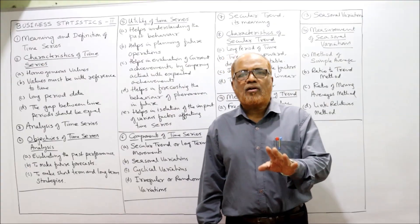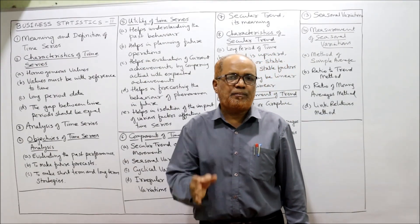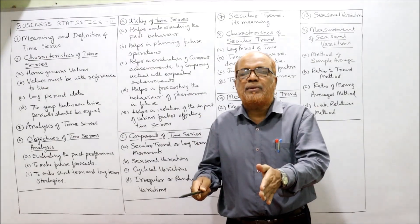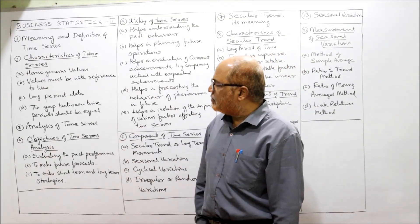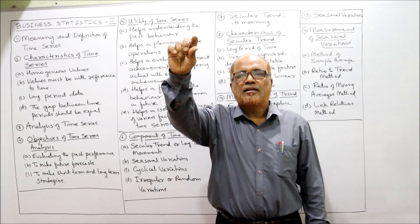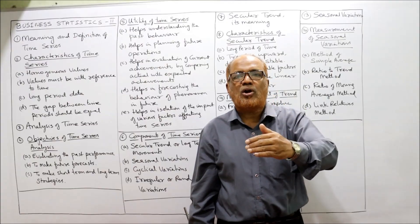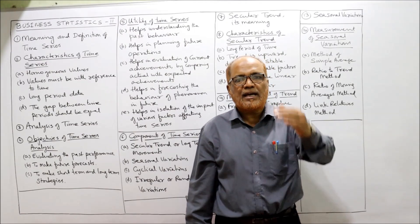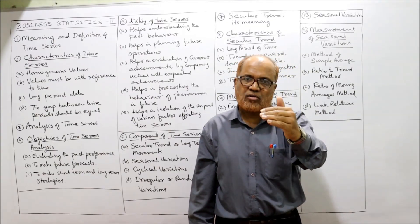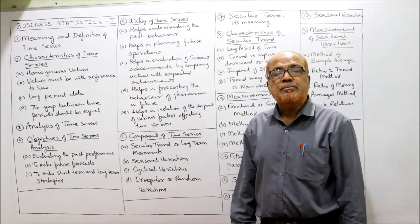Third, time series requires a long period of time. If we record data for only one or two years, it is not called time series; it requires data over five, ten, or fifteen years. Fourth, the gap between time periods should be equal. For example, if sales are taken for 2010, the next data point should be 2011, then 2012, and so on. If the gaps are unequal — such as 2010, 2014, 2015, 2018 — it will not be called a time series.